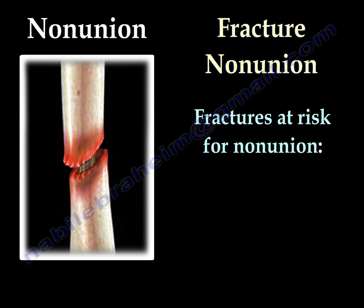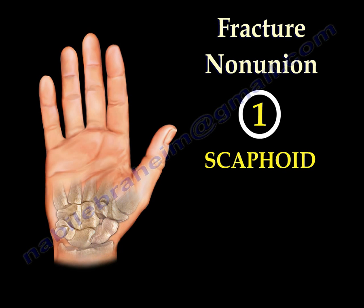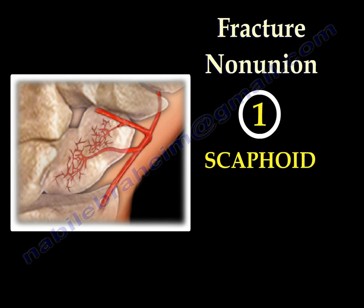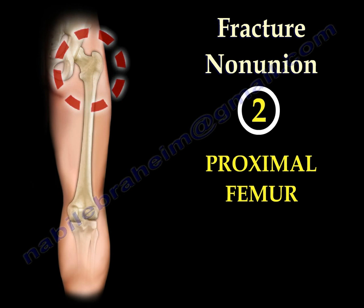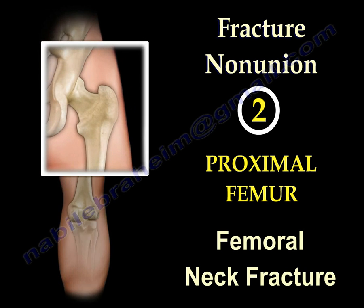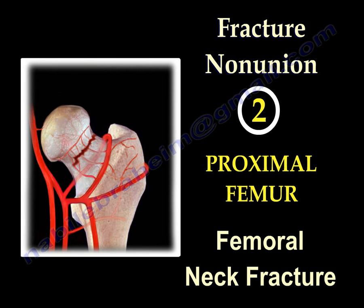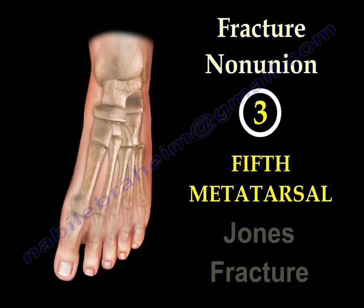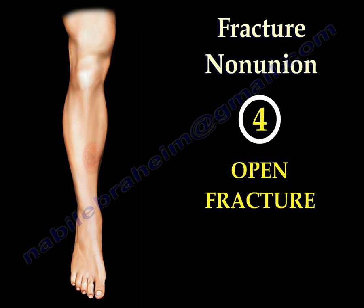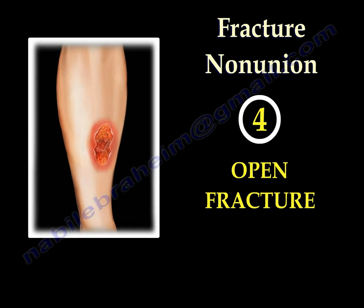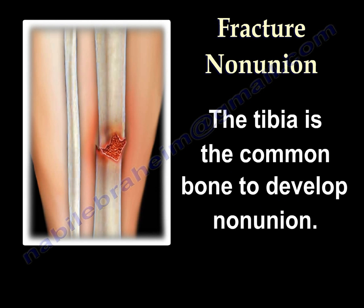Fractures at Risk for Non-Union. One is Scaphoid Fracture. Another one is Fracture of the Femoral Neck. Another one is the 5th Metatarsal Fracture — we call it Jones Fracture. The worst one is the open fracture, especially the tibia. The tibia is the most common bone to develop non-union.